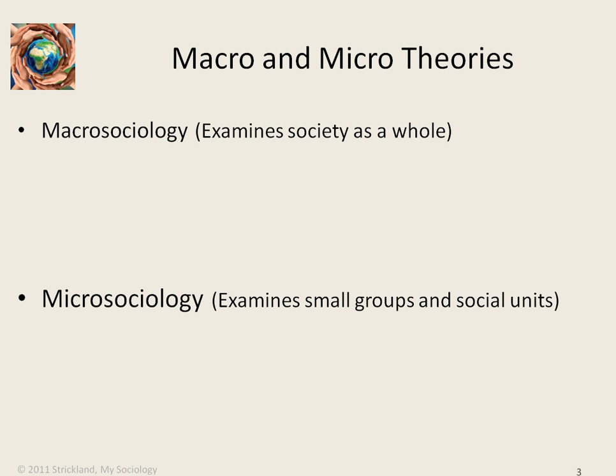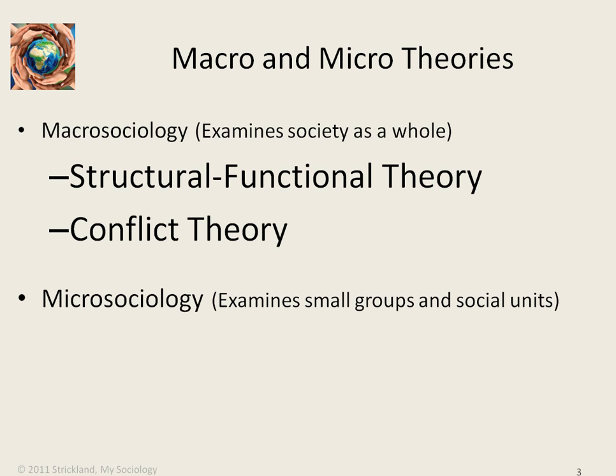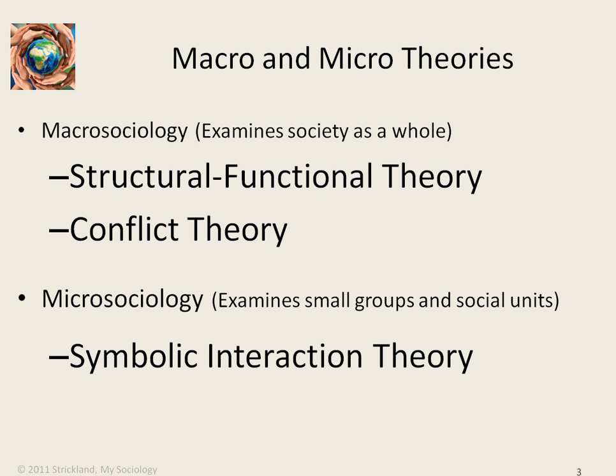To summarize: macro sociology examines society as a whole, while micro sociology examines small groups and social units within the larger structure. In sociology, there are three main paradigms used as models for explaining phenomena: structural functional theory, social conflict theory, and symbolic interaction theory. Structural functional theory and conflict theory are macro level in their analysis, looking at the structure of society as a whole. Symbolic interaction theory examines small groups and social units within society.